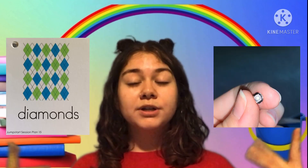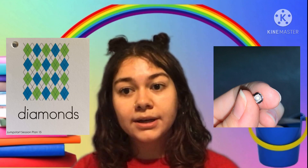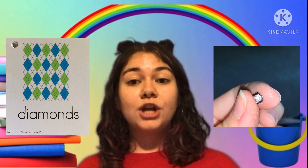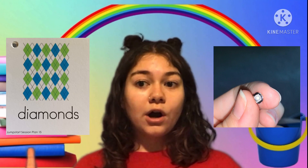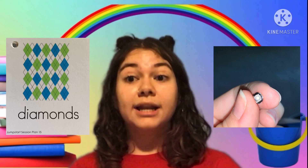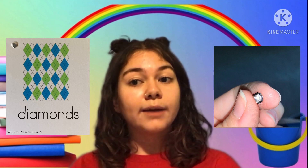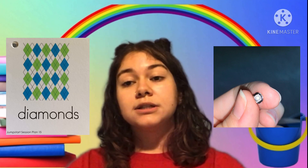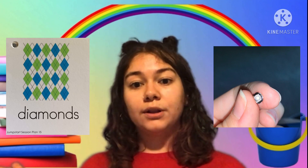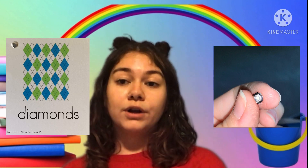The next object goes with the vocab word 'diamond.' The object is very small — it's a diamond earring. It's not exactly the same shape as the diamond on the card, but it is a diamond and a type of diamond shape. So 'diamond' doesn't only mean the shape we learned about; it can also mean the material, like a diamond earring.